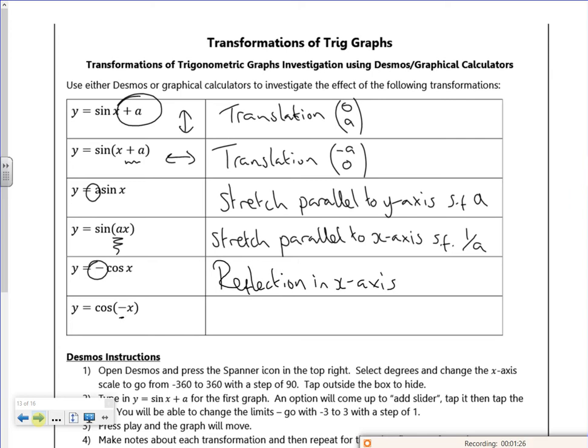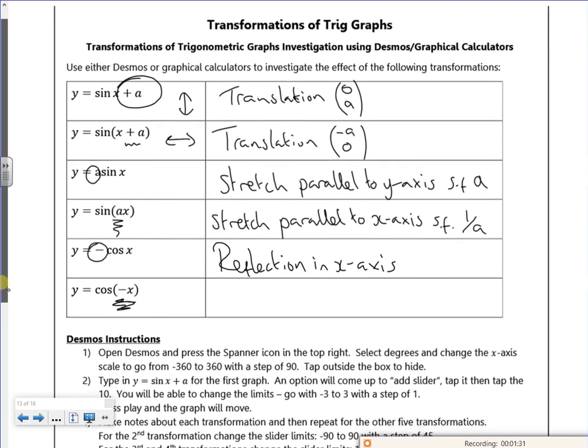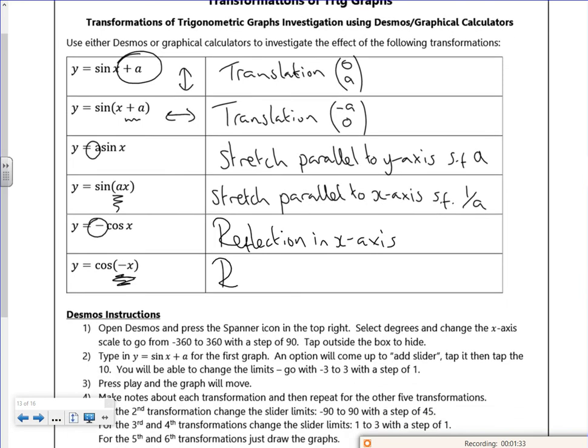And that one there, I'm switching, so I might be plotting minus 360 degrees to plus 360 degrees. So that's a reflection in the y-axis.